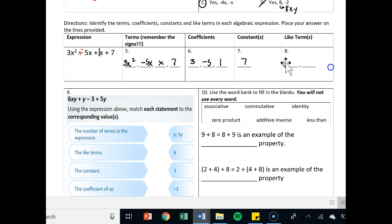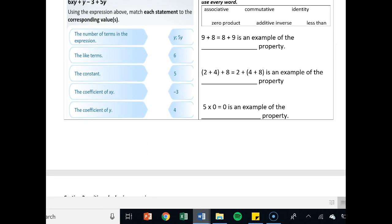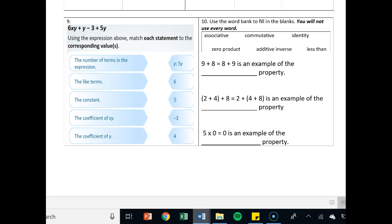Constants, numbers all by itself. That's just 7. And like terms, we've got negative 5x and x. If you put 1x, that's okay as well. Number 9, it says use the following expression above to match each statement to the corresponding value. So the number of terms in the expression, we've got 1, 2, 3, 4 terms. So that matches up with this guy right here.